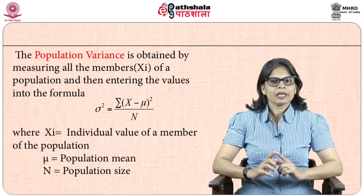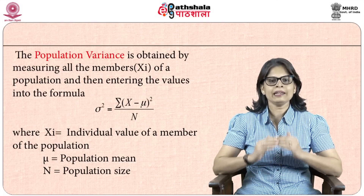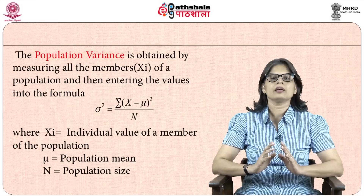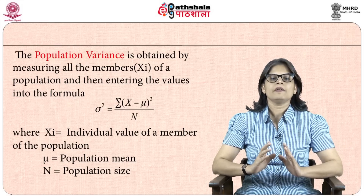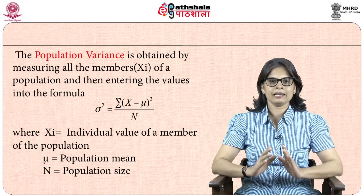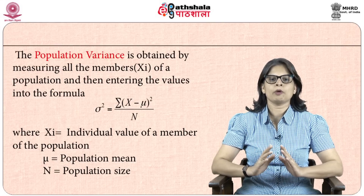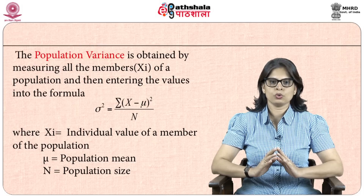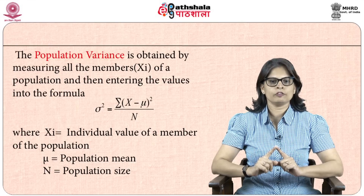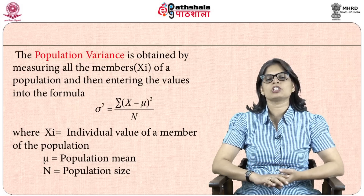The population variance is obtained by measuring all the members of a given population and entering all these values into the formula: sigma-squared equals summation of (x minus mu) squared divided by the total number of units in the population, that is capital N. Here x denotes the individual value of a member of the population, mu denotes the population mean, and N denotes the population size.